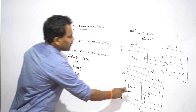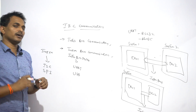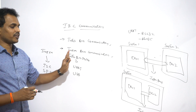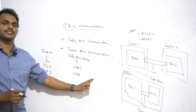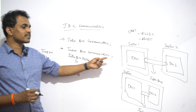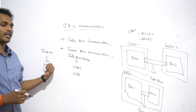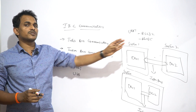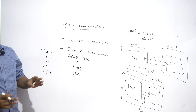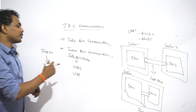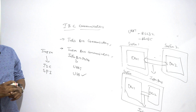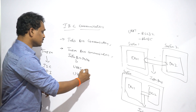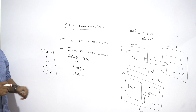I2C communication protocol helps us to communicate two devices present in the same system, like an 8051 controller with an EEPROM chip, or an 8051 controller with a port expander, or an 8051 controller with an RTC chip — because these two devices exist in one system. Whenever you want to communicate two different devices in different systems, like a mobile and PC or mobile and laptop, you use USB.